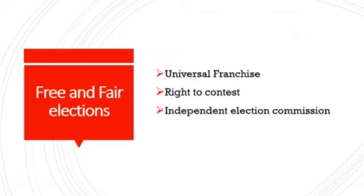Our constitution makers were very much worried about elections and specially free and fair elections. So they provided many provisions to ensure free and fair elections. First one is universal franchise — under this, all adults, that is persons of age 18 years or above, are eligible to vote in the elections without any discrimination. Every Indian citizen who has completed the age of 18 years is able to cast their vote. Adult franchise ensures that all citizens are able to participate in the process of voting for their representatives.